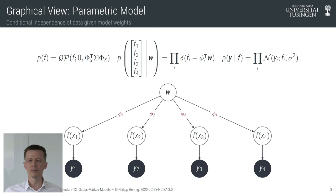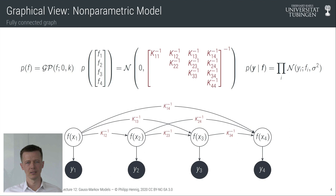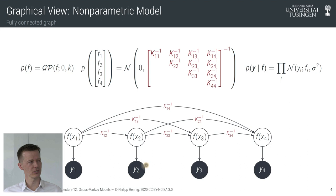This leads to an inference algorithm where the computational complexity is still polynomial — cubic — but now in the number of observations rather than the number of weights. In terms of a graph, this corresponds to an essentially fully connected graphical model where every function value depends on all other function values. Conditioned on all function values, you still have independent observations, so the likelihood still remains factorizing in this way.